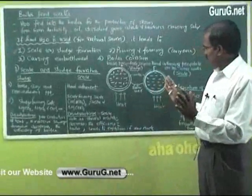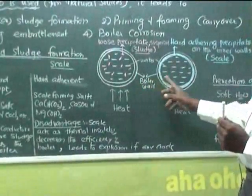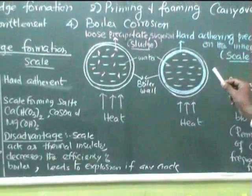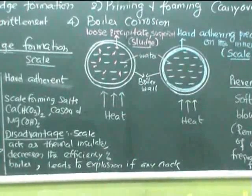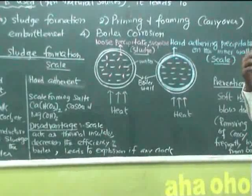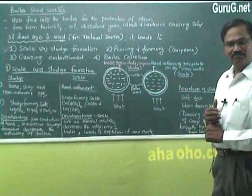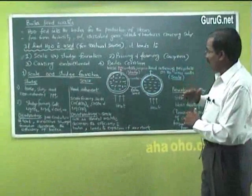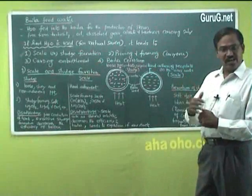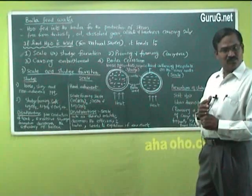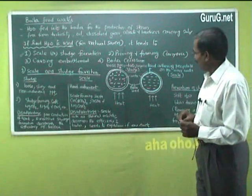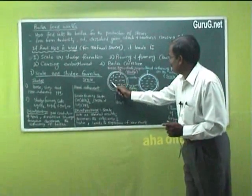This is a boiler. I have taken two things — one to explain scale formation and the other to explain sludge formation. When water is boiled in the boiler, water evaporates and goes out as steam, but the soluble chemical compounds present in the boiler water, since they are highly ionic, remain in the boiler. The concentration of the salt progressively increases until a saturation point is attained. During that saturation point, certain chemical compounds present in the water may appear as precipitate.